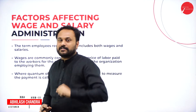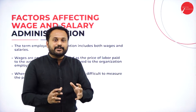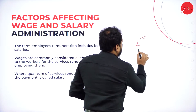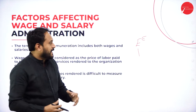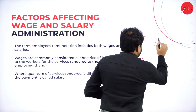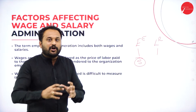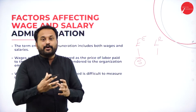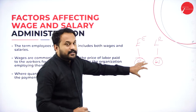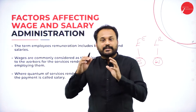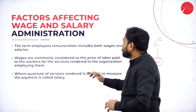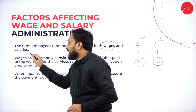Remuneration is given to both employees and laborers. Employees are the ones who do quantum work and receive salary on a per-month basis. Laborers are the people who give services the employer asks them to do, and they receive wages. So both salary and wages are termed as remuneration — employee remuneration includes both wages and salaries.